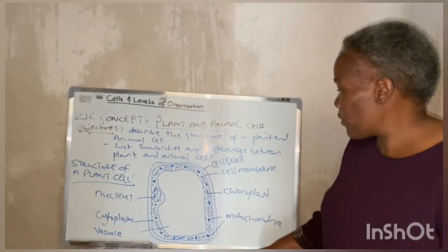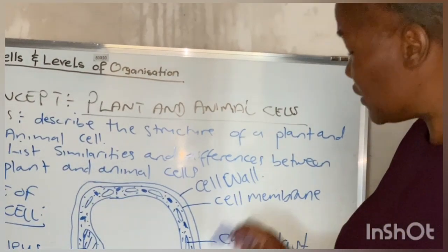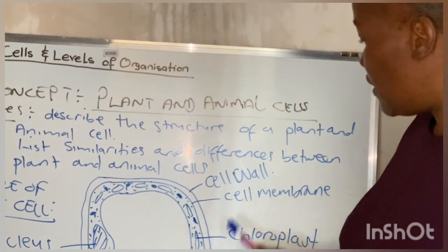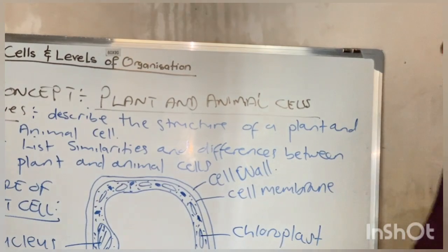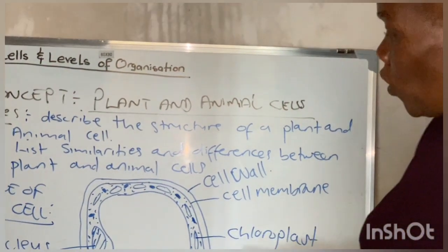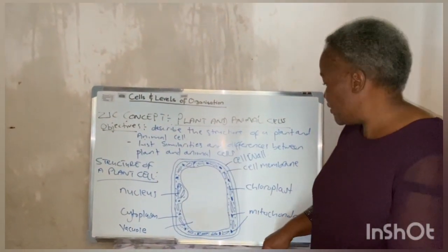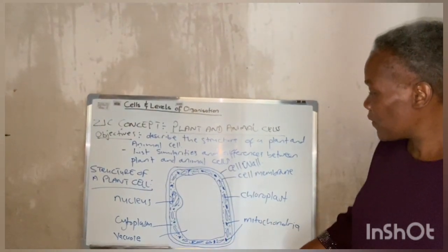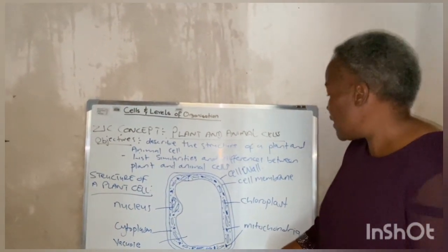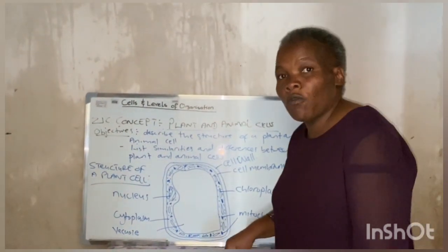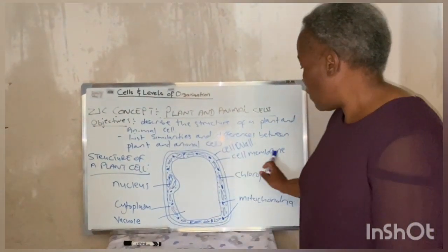Then the cell membrane. The cell membrane is living and it's a very thin layer which is partially permeable, and it surrounds the cytoplasm. Its main functions are to contain the contents of the cytoplasm together, and because it is partially permeable, it is the one that controls the movement of substances into and out of the cell.